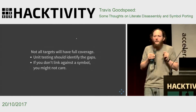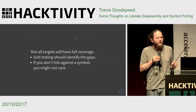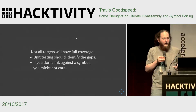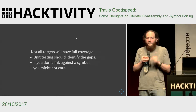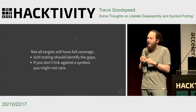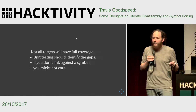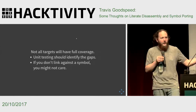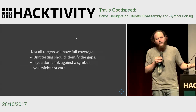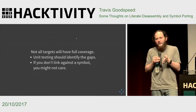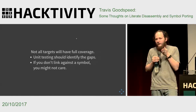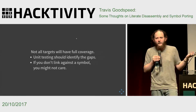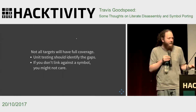Not all targets have full coverage, but unit testing will show you the gaps between them. And if you don't link against a symbol, you might not care that it's missing. There are plenty of functions that I knew the location of a long time ago in older versions that I've lost in the new versions. But if I'm not actually linking against that symbol, hooking it or replacing it, I don't care — I can skip by it.